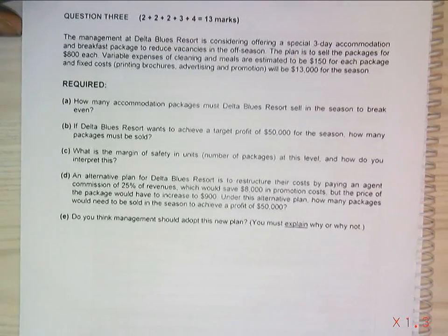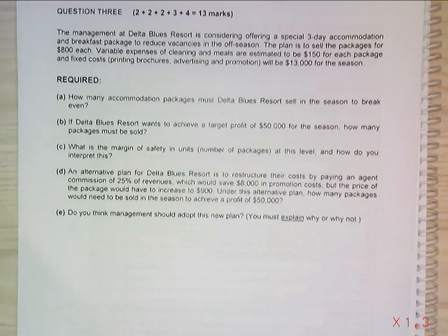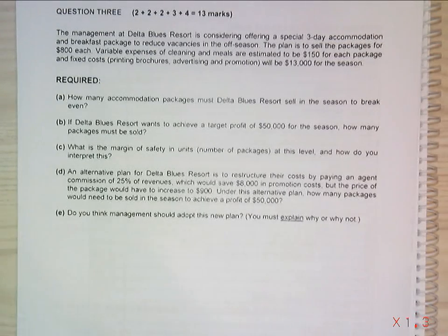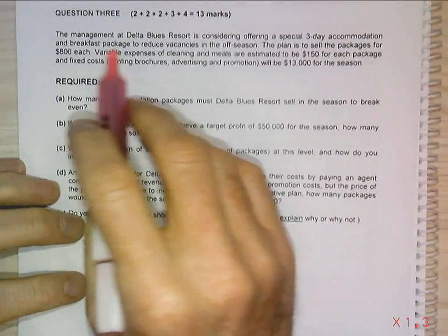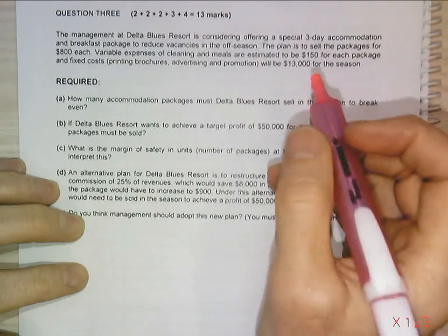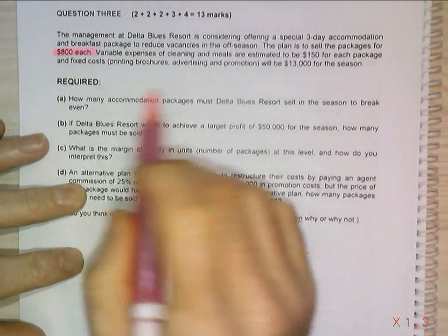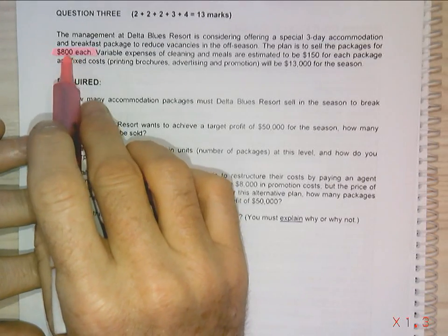Okay, this is take two on question number three. Now what we've got here is a cost-volume-profit question. The management at Delta Blue Resort is considering offering a special three-day accommodation and breakfast package to reduce vacancies in the off season. The plan is to sell the packages for $800 each - well there's a piece of information I need, that's my selling price.